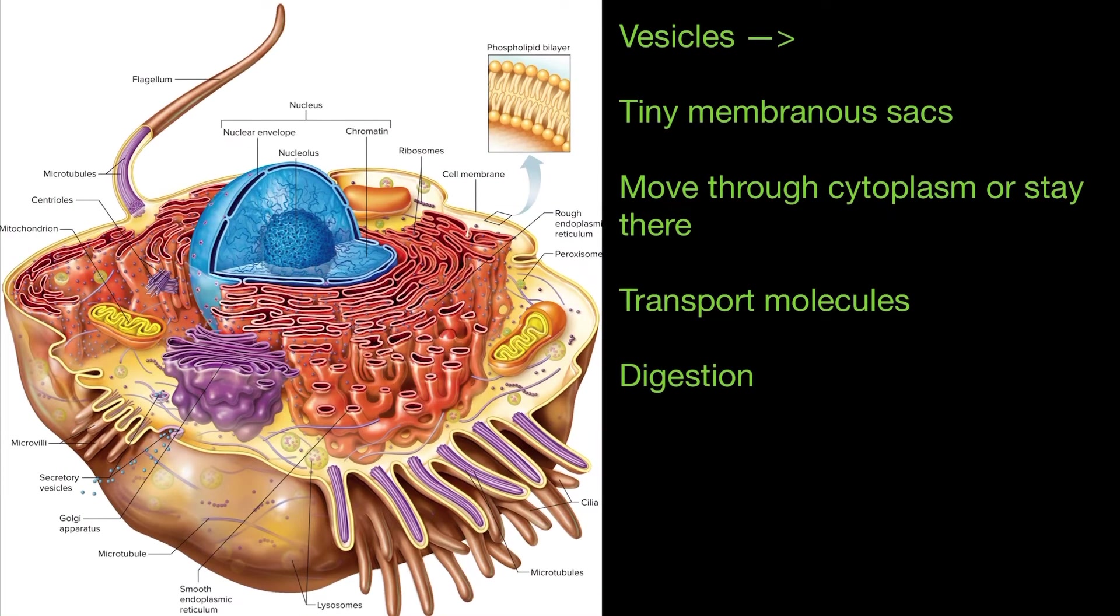Now vesicles are going to be tiny membrane sacs. There really isn't a good example of one in this picture but we'll get to it in a minute. Now they move through the cytoplasm or they stay there. Their primary functions are to transport molecules and also for digestion. Let's get into examples of specific types of vesicles.